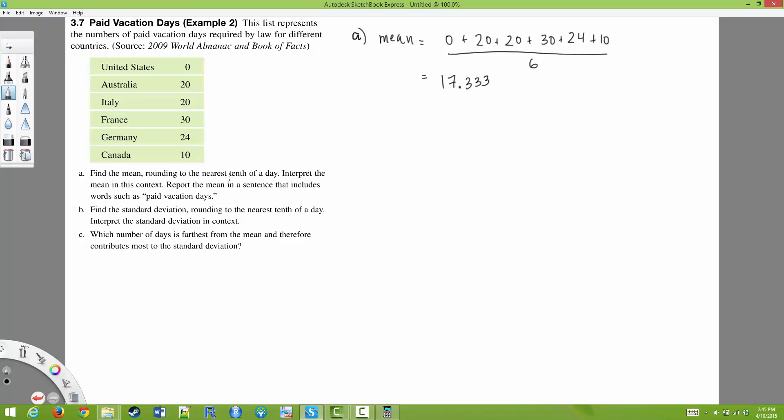The answer asks us to round to the nearest tenth of a day. So we get 17.3 days is the average number of paid vacation days.